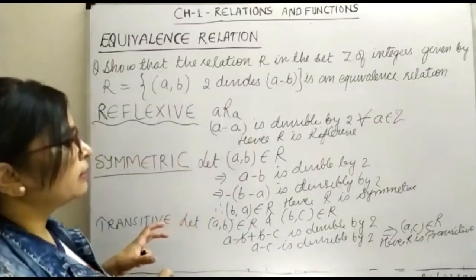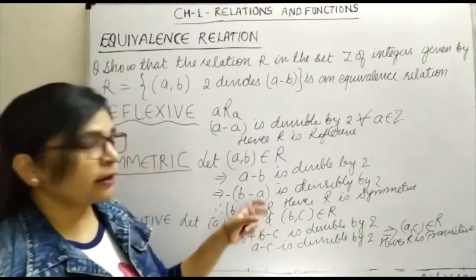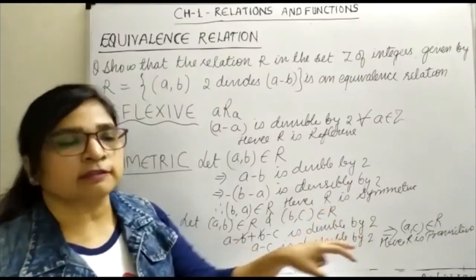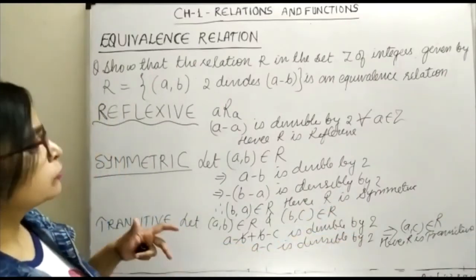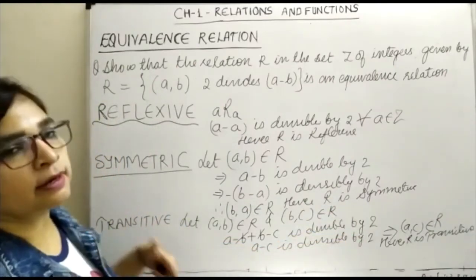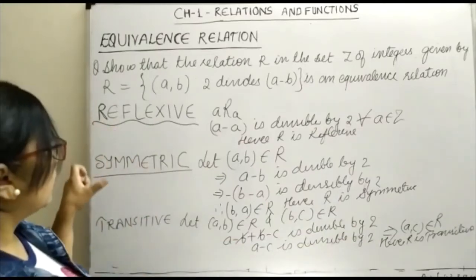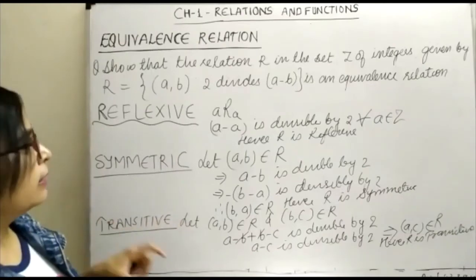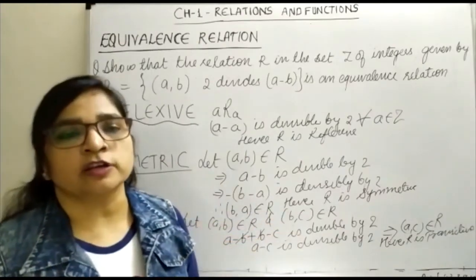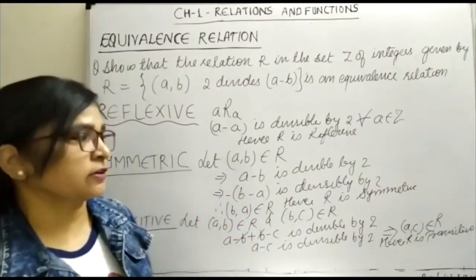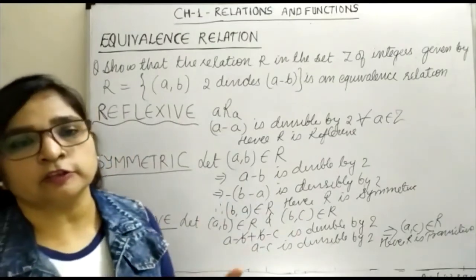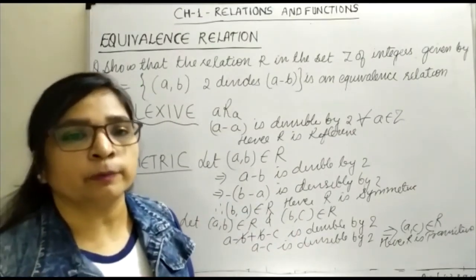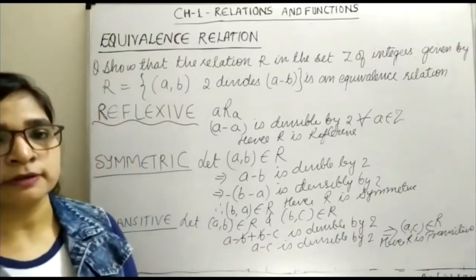We have seen that if (a,b) belongs to R and (b,c) belongs to R, we concluded that (a,c) also belongs to R. All three conditions—reflexive, symmetric, and transitive—are satisfied. Hence, the given relation is an equivalence relation. If any of these properties is not satisfied, then the relation will not be an equivalence relation. Thank you.